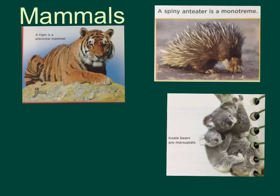Other than laying eggs, monotremes are just like other mammals. Marsupials, like the koala, the possum, and the kangaroo, are pouched mammals. They give birth to partially developed offspring, and then carry that developing young in their pouch on the front of their bodies. Most of these guys are found in Australia. Placental mammals, like you and me and the tiger, develop inside their mother for a period of time and then are born much more mature than monotremes and marsupials — so they come out very well developed.